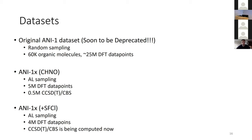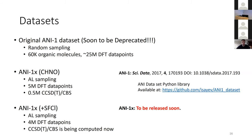We've developed several datasets. The original dataset has 50,000 molecules and 25 million data points — soon to be deprecated. Using active learning, we can be much more data-efficient. We also have much more diverse and easier-to-work-with datasets, and we have coupled cluster data that will be released soon. We're currently working on extensions with sulfur, halogens, and running coupled cluster calculations.